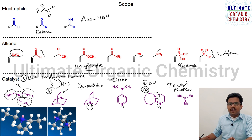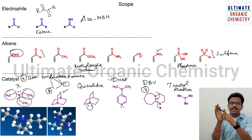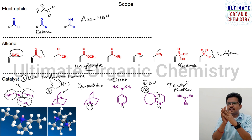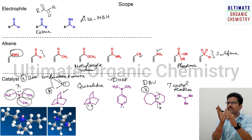The only drawback of the Baylis-Hillman reaction is that the rate of reaction is slow — some reactions take two, three, four days, or even one week, which is a major drawback. Otherwise the reaction is very interesting. When using methyl acrylate, you need to quench with sodium hydroxide or potassium hydroxide solution so the smell is eliminated, because the acrylate is hydrolyzed during the quenching process.